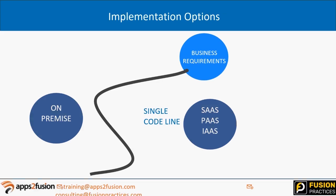First of all, on-premise does not exist at all in Fusion Applications. Oracle provided an on-premise version up to release nine — that was the last on-prem version. Earlier, Oracle used to provide an on-prem version every three releases, but now everything is hosted on cloud. We do not have an on-premise option.